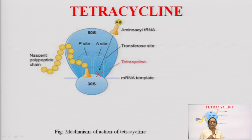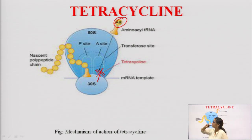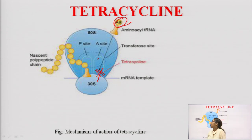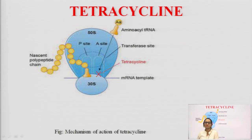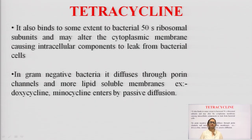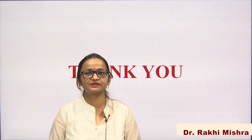Tetracycline attaches itself to the A site (acceptor/transferase site) of the 30S ribosomal subunit. When it binds there, aminoacyl-tRNA cannot bind at the A site, so the transfer of amino acid from A site to P site is inhibited. Because the amino acid cannot be transferred, the polypeptide chain cannot grow, proteins are not synthesized, and the bacteria die. Tetracycline also binds to some extent to the 50S ribosomal subunit, and in gram negative bacteria it diffuses through porin channels.